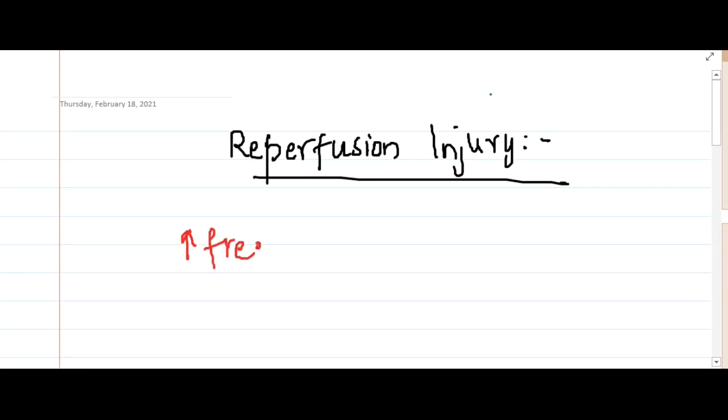Hello friends, let us now learn some important points about reperfusion injury. Reperfusion injury occurs due to increased free radicals. It also occurs in MI, either due to increased free radicals or increased calcium.